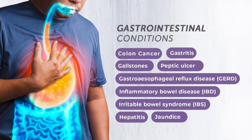Gilbert syndrome: patient presents for routine check-up; bilirubin is raised but all other liver enzymes are normal — specifically unconjugated bilirubin is raised with no other symptoms or abnormal tests. Dubin-Johnson syndrome: conjugated hyperbilirubinemia (raised conjugated bilirubin), and urine dipstick is abnormal — this differentiates it from Gilbert syndrome.